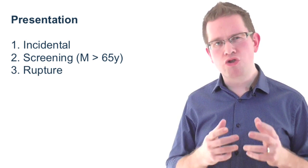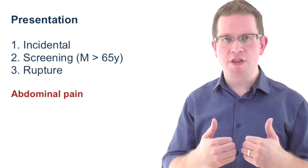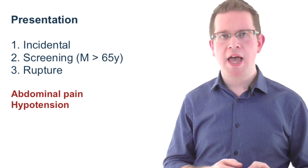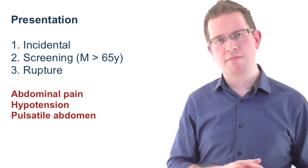Ruptured AAA presents as a true surgical emergency, typically with abdominal pain radiating through to the back, hypotension, and a pulsatile abdominal mass in a state of extremis. Examination should involve palpation of the aneurysm above the aortic bifurcation. Palpate above the umbilicus, moving the hands from lateral to medial on the abdomen until the pulsation can be felt.